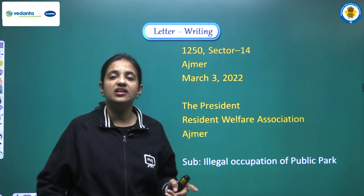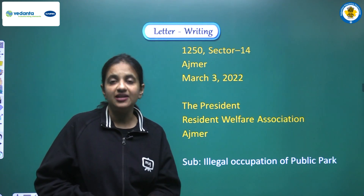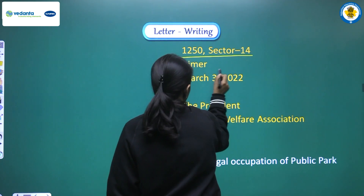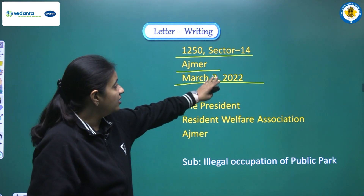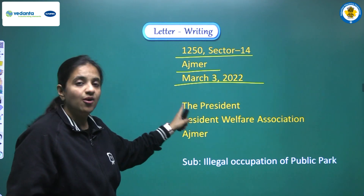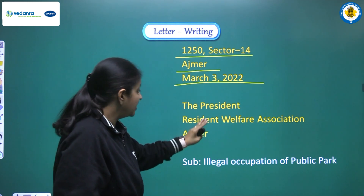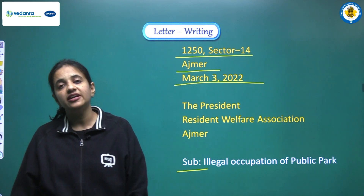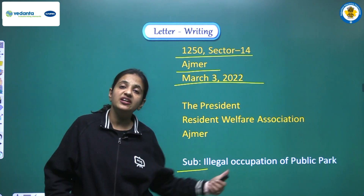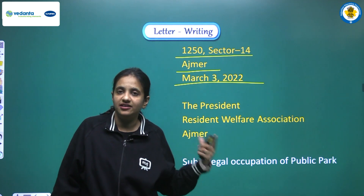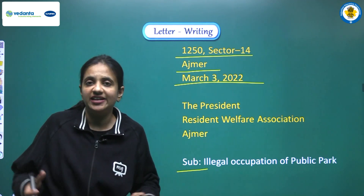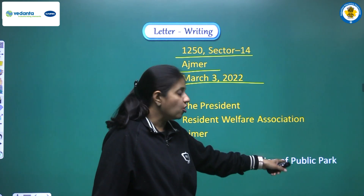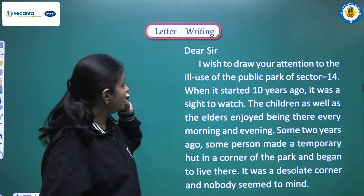So let's see how we can start. First we write the address — it was not given in the question so we can use any address in a proper format: 12/50, Sector 14, Ajmer. Then the date: March 3, 2022. We address: The President, Resident Welfare Association, Ajmer. We write the subject: Illegal occupation of public park. Then we begin with 'Dear Sir.'